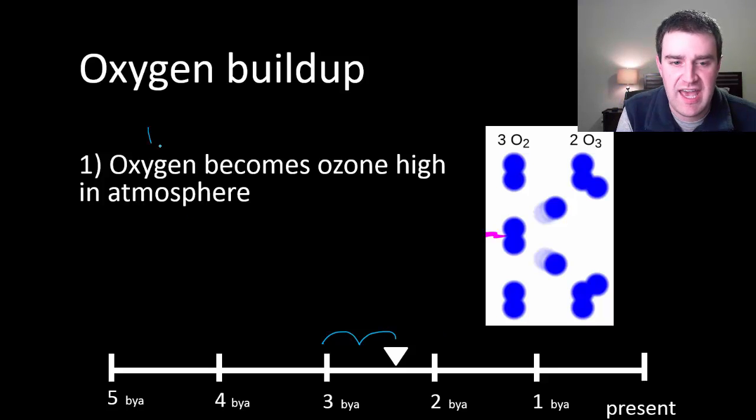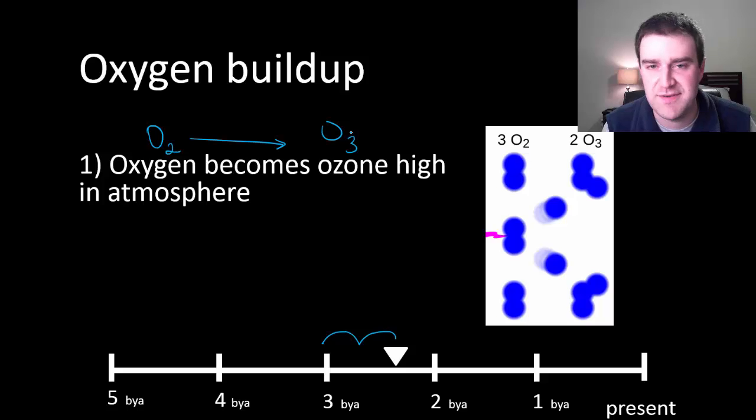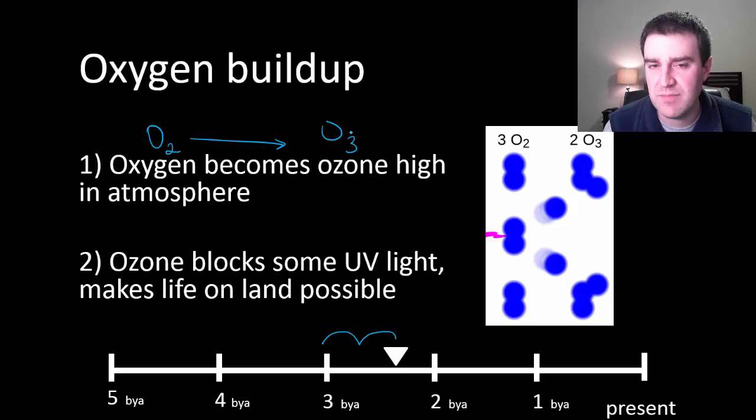As it turns out, free oxygen gas O2 can actually become ozone O3 high up in the atmosphere if you give it enough time. And ozone is really important, as we learned in ecology, because ozone can block UV light, and UV light can damage DNA and actually make organisms die or unable to reproduce their species.